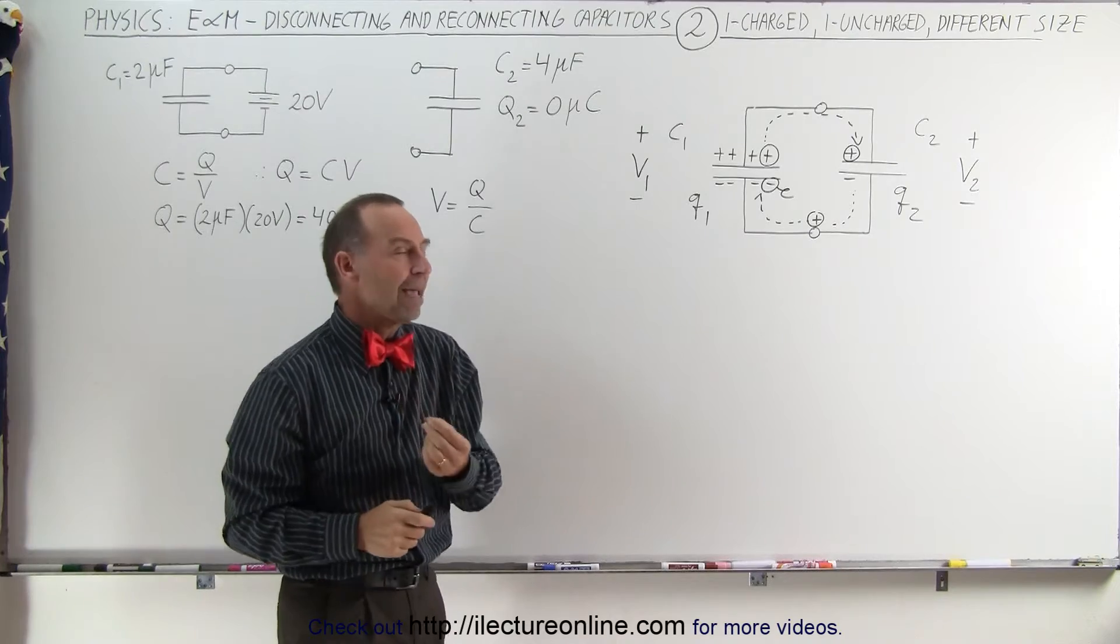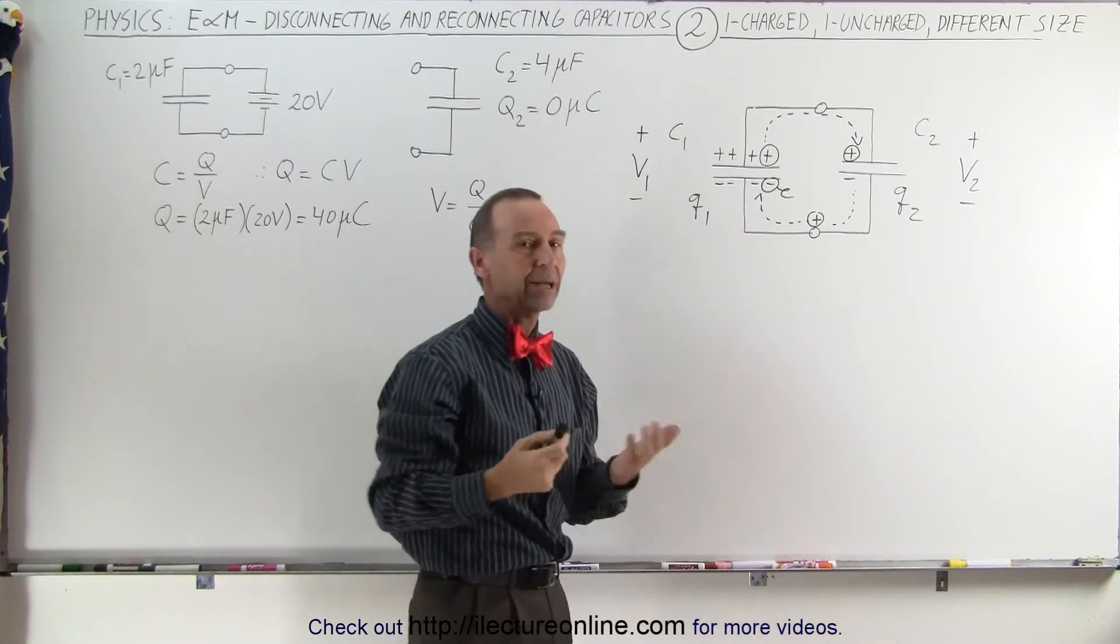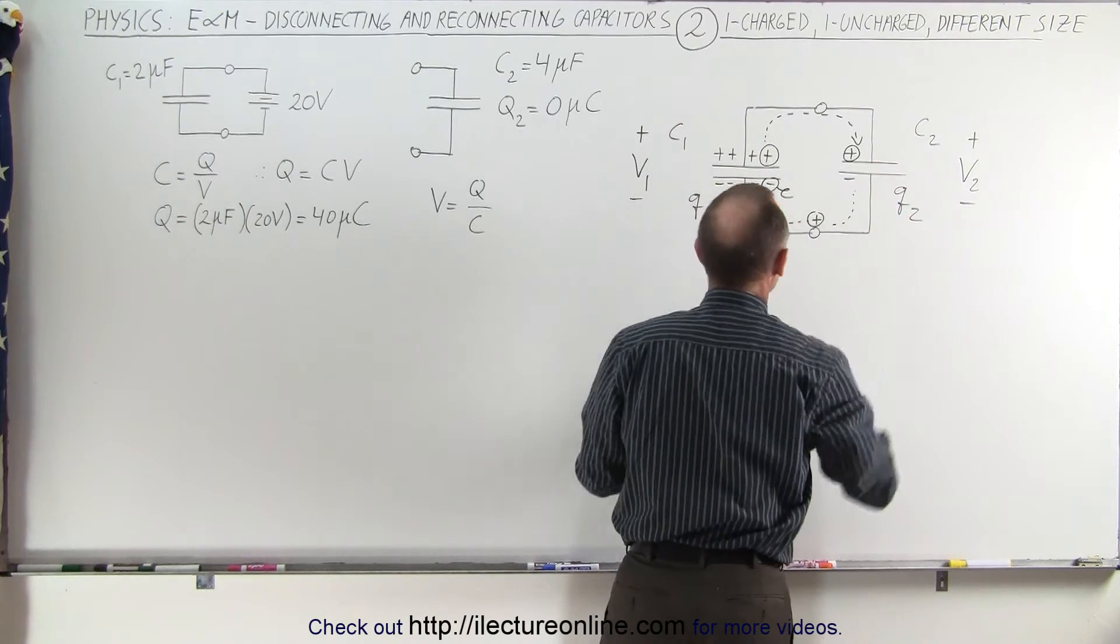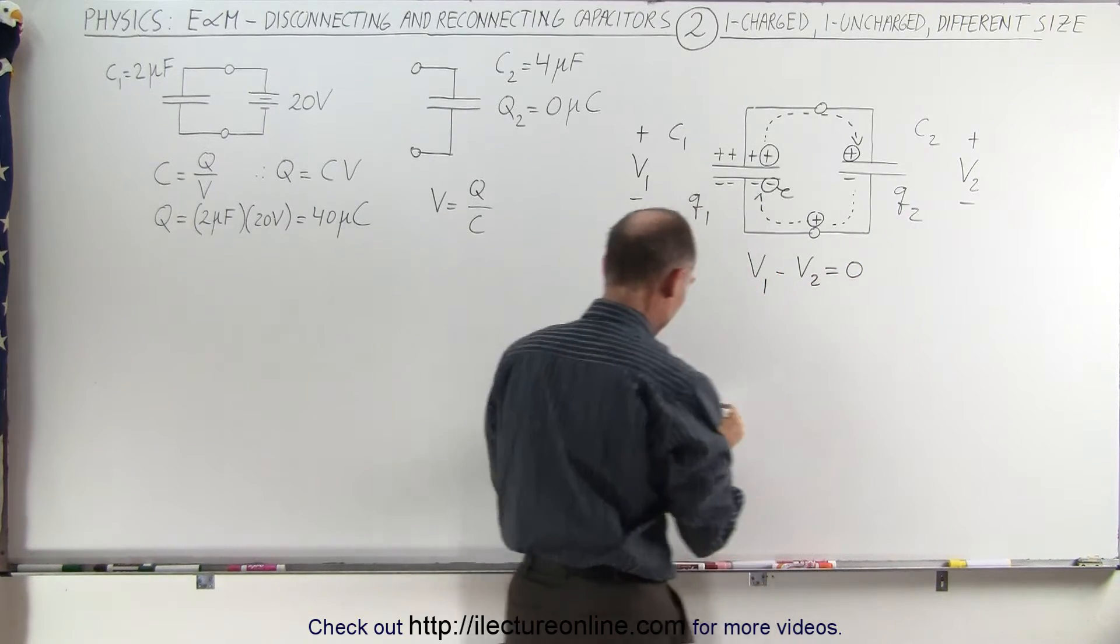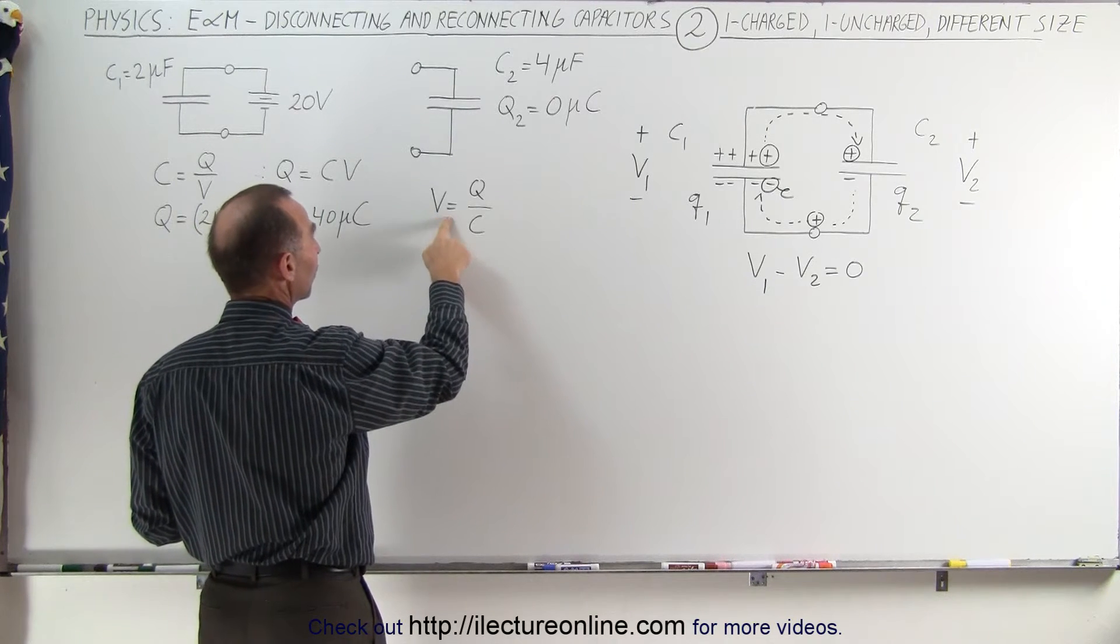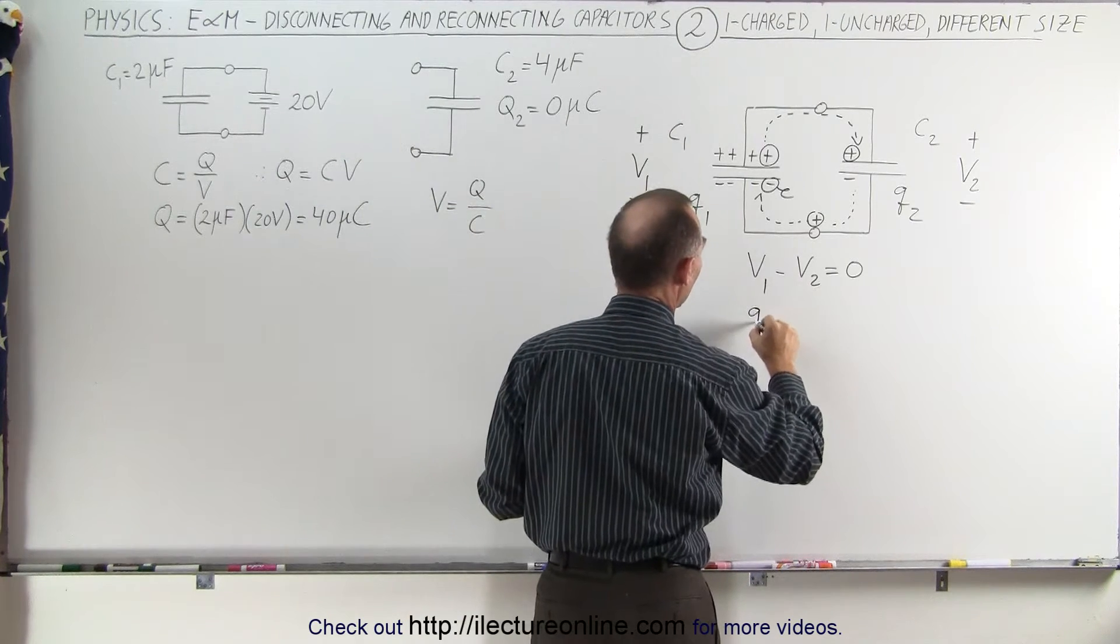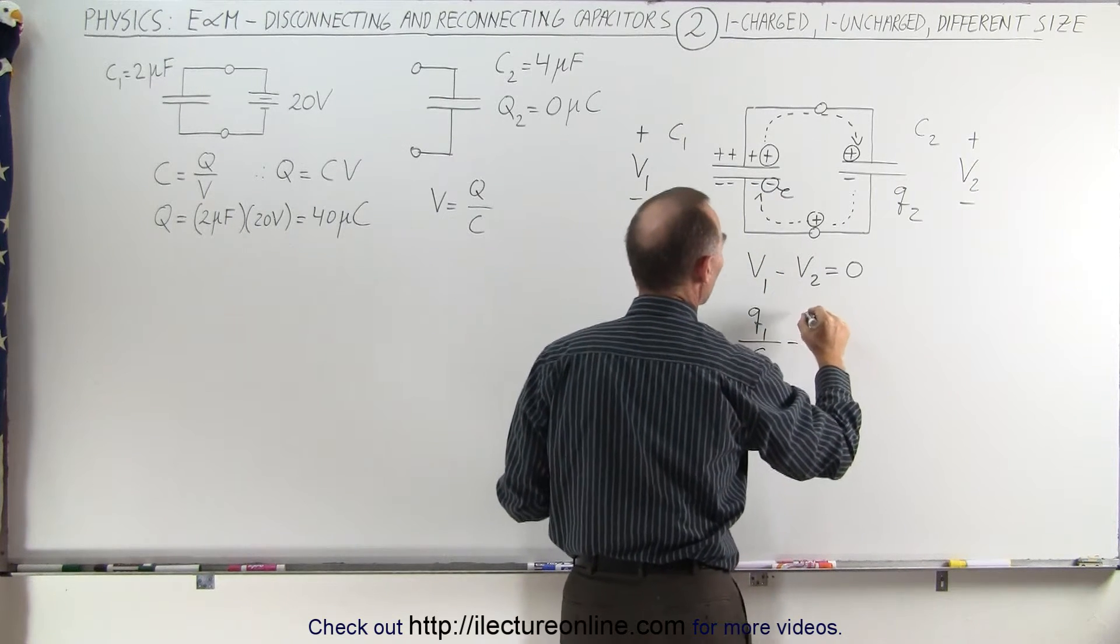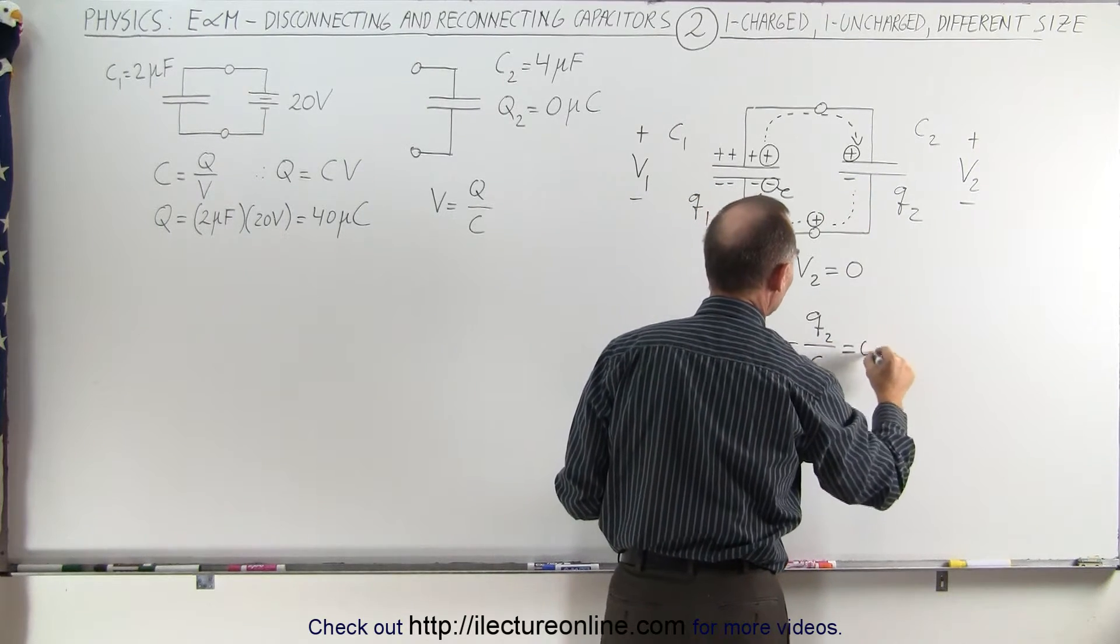The approach is going to be the same. What we do know is using Kirchhoff's rules that if we go all the way around the circuit the voltages must add up to zero. So we have a positive voltage going from there to there and a negative voltage going from there to there, which means that V1 minus V2 must add up to zero. And using the definition of capacitance, we know that the voltage therefore is the ratio of the charge divided by the capacitance. We can then say that Q1 being the final charge on this capacitor divided by C1 minus Q2 being the final charge on this capacitor divided by C2 must add up to zero.